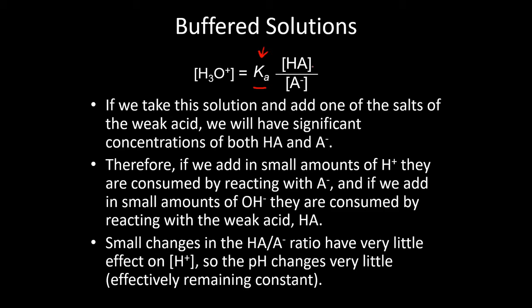How much of the original acid is present and how much of the conjugate base is present. What we're going to do is we're going to make a solution that has a good bit of the weak acid in it, and then we're going to add a significant amount of a salt of that weak acid, which is just a soluble salt, usually sodium, whatever the conjugate base is. When we do that, we're going to have a significant concentration of both HA and A-. So we'll have a bunch of both of these.